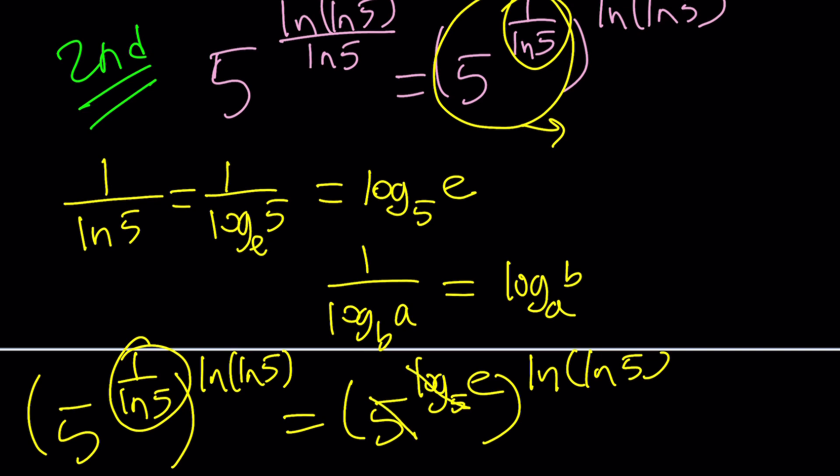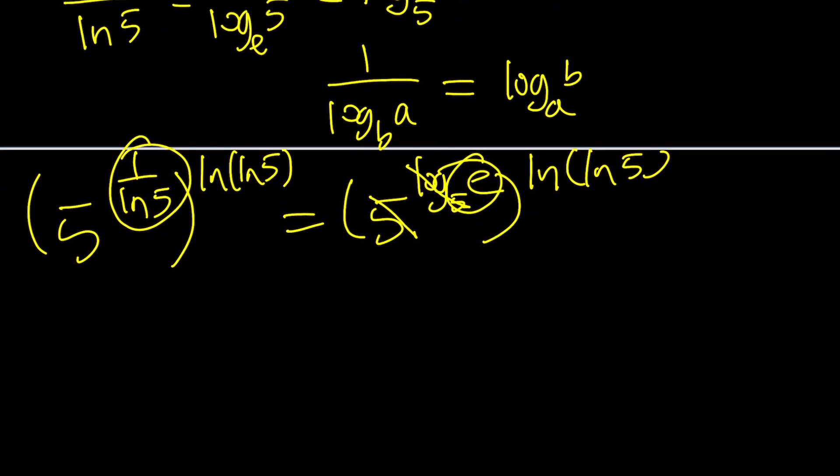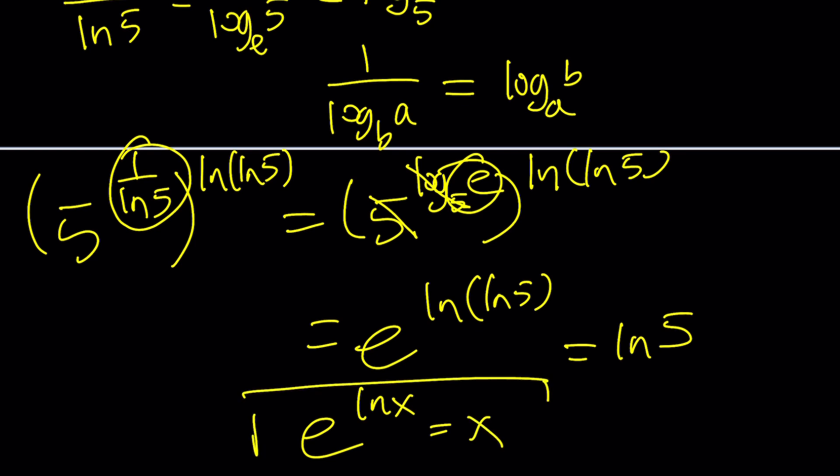These fives are going to cancel out again for the same reason. We're going to end up with e. E to the power ln(ln5) is ln 5 because e to the power ln x is equal to x, as you should know. This is a super-duper important identity. So, we got ln 5 one more time.